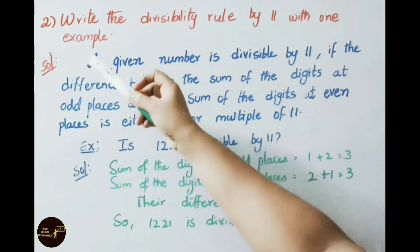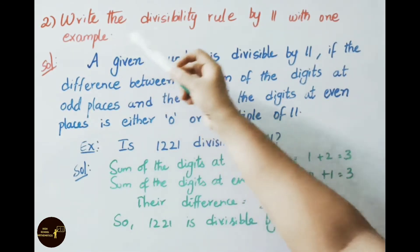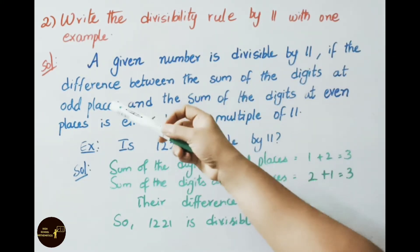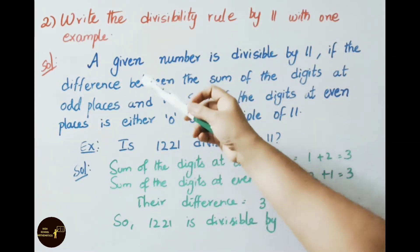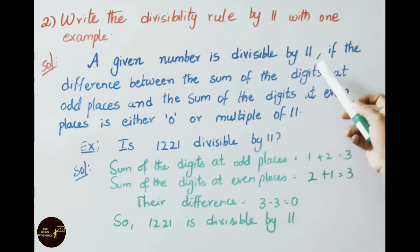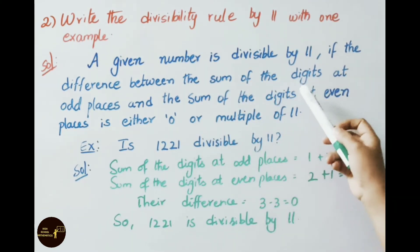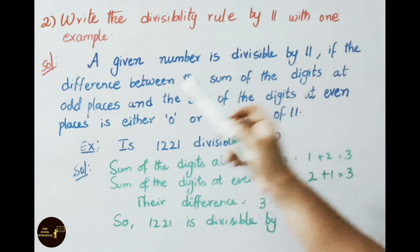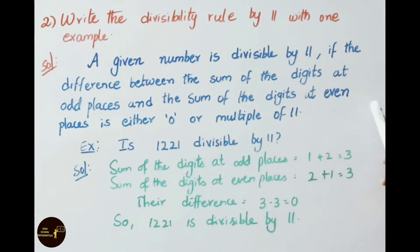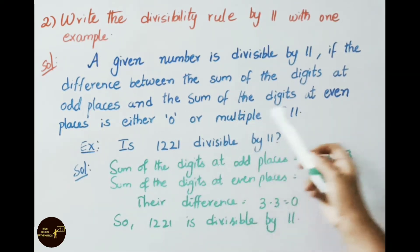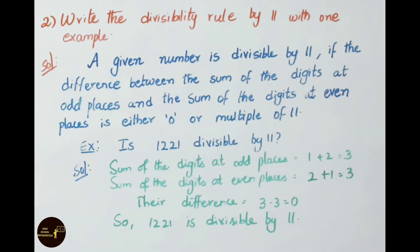See the second sum: Write the divisibility rule for 11 with one example. A given number is divisible by 11 if the difference between the sum of the digits at odd places and the sum of the digits at even places is either 0 or a multiple of 11.